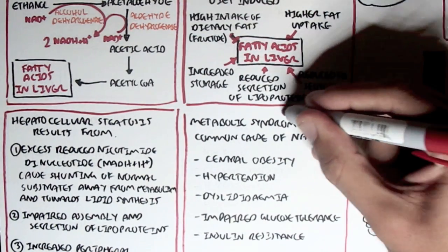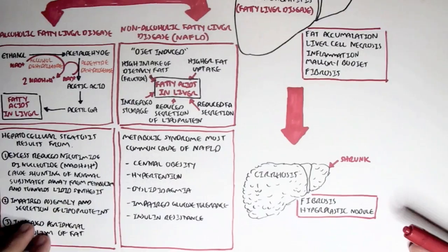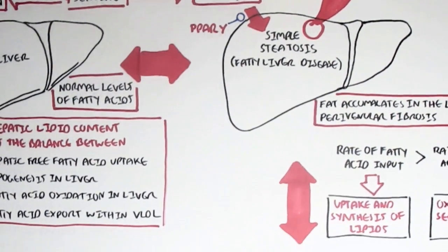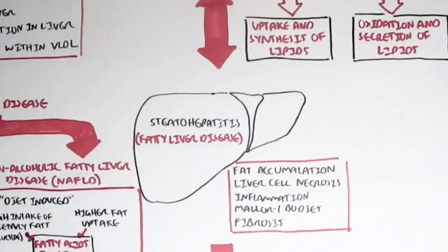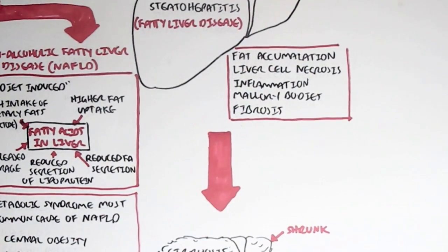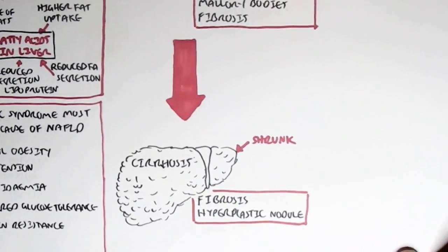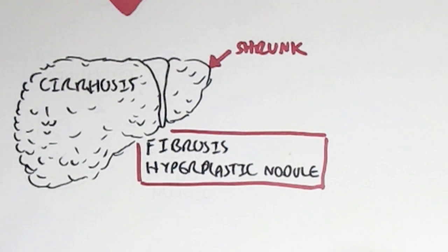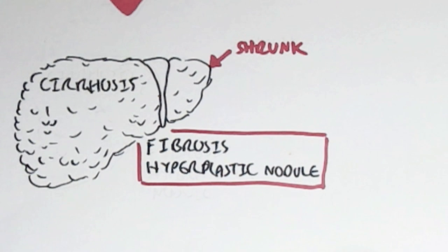That concludes the video on fatty liver disease. You can see how from a healthy liver, if we abuse alcohol or have an unhealthy diet, it can lead to steatosis, then steatohepatitis with inflammation — these are all fatty liver diseases — and finally it can lead to cirrhosis. Liver fibrosis is essentially when some liver cells produce too much extracellular matrix proteins, such as collagen, which gets deposited within the liver causing stiffening. The next video will focus mainly on cirrhosis and liver fibrosis.